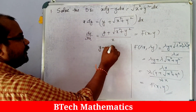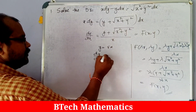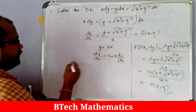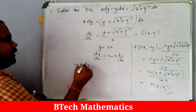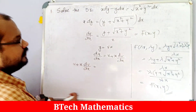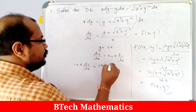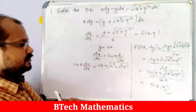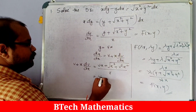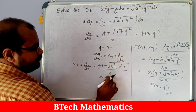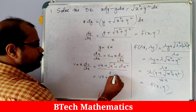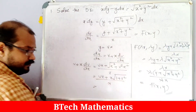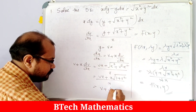We substitute y equal to vx and dy/dx equal to v plus x dv/dx. Rewriting the equation: v plus x dv/dx equals vx plus root of x squared plus v squared x squared, all divided by x. Simplifying the numerator, we take x outside the root to get x times root of 1 plus v squared, divided by x. Cancelling x, the right side becomes v plus root of 1 plus v squared.